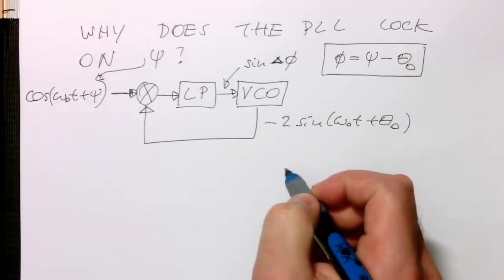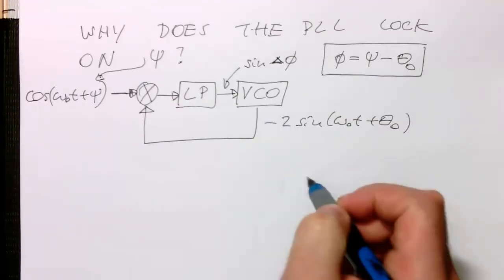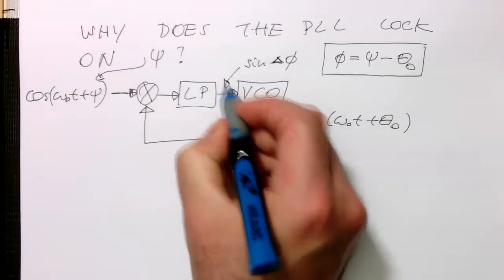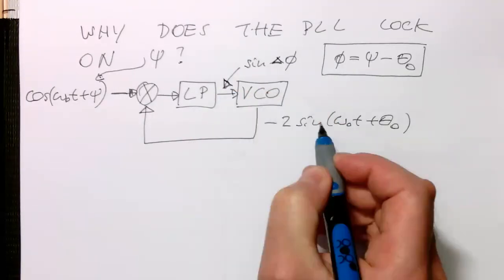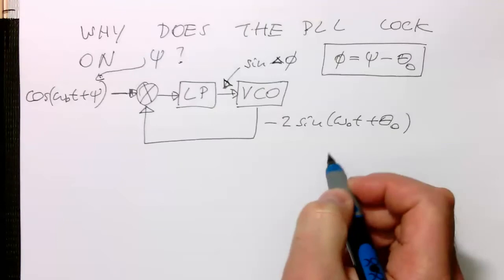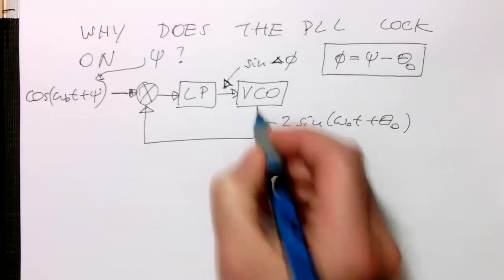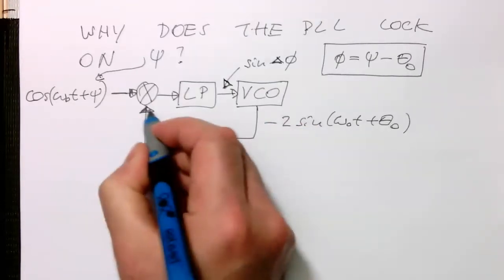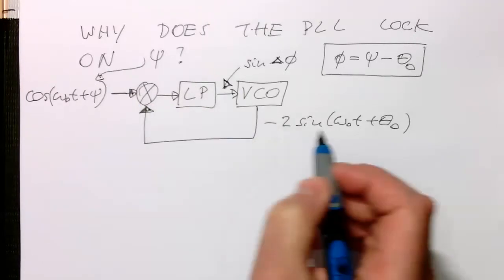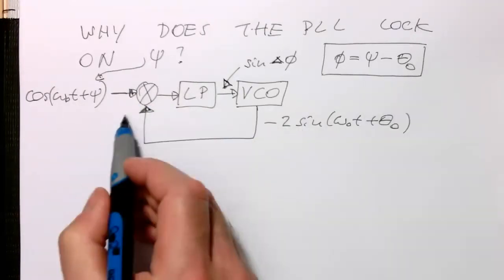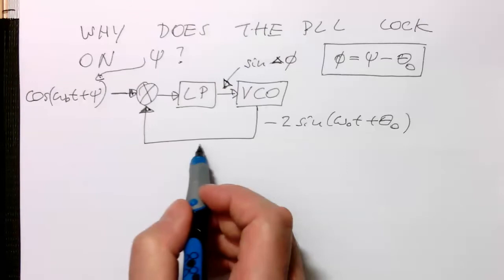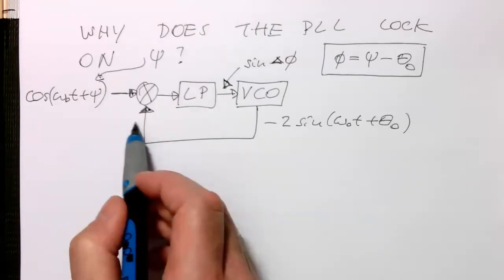So the question now is, why does it actually lock on this input signal? So the hand-waving explanation is that the phase difference in the lock condition is just 90 degrees here.